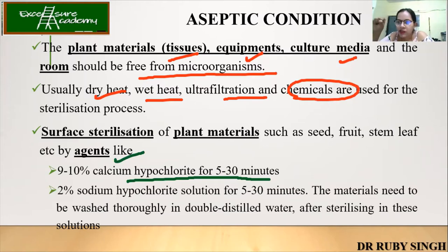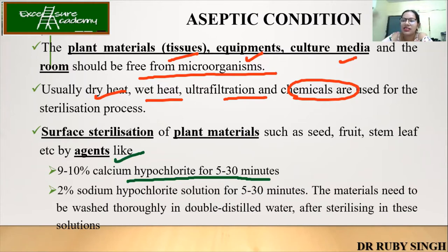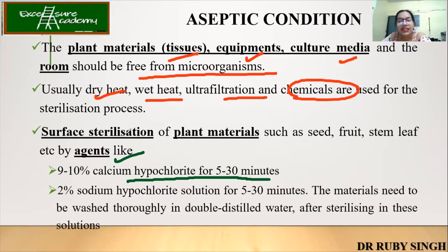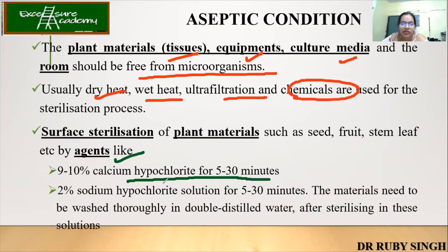So how do we do surface sterilization? You take a small piece of the plantlet, put it in a petri dish, and with the help of calcium hypochlorite or sodium hypochlorite, using a brush, you sterilize it. Then wash it with deionized water — that is double distilled water — to remove the calcium hypochlorite, because we don't want that during our experiment. Then make small pieces and put into test tubes that contain your media — Murashige and Skoog (MS) media. The first agent is 9 to 10% calcium hypochlorite, then 2% sodium hypochlorite solution, again for 5 to 30 minutes.